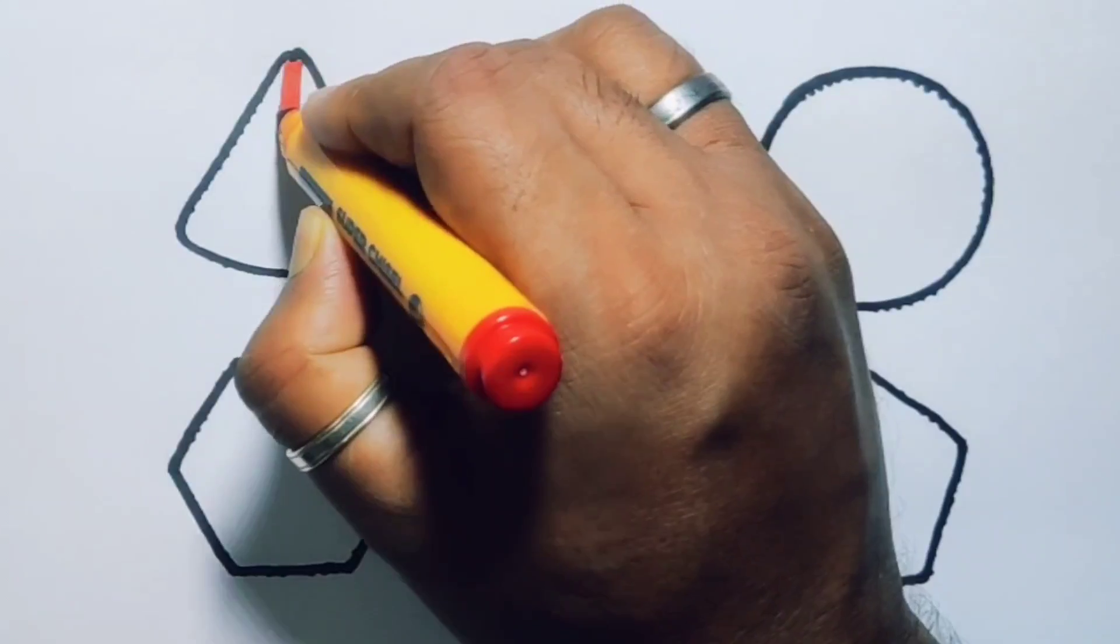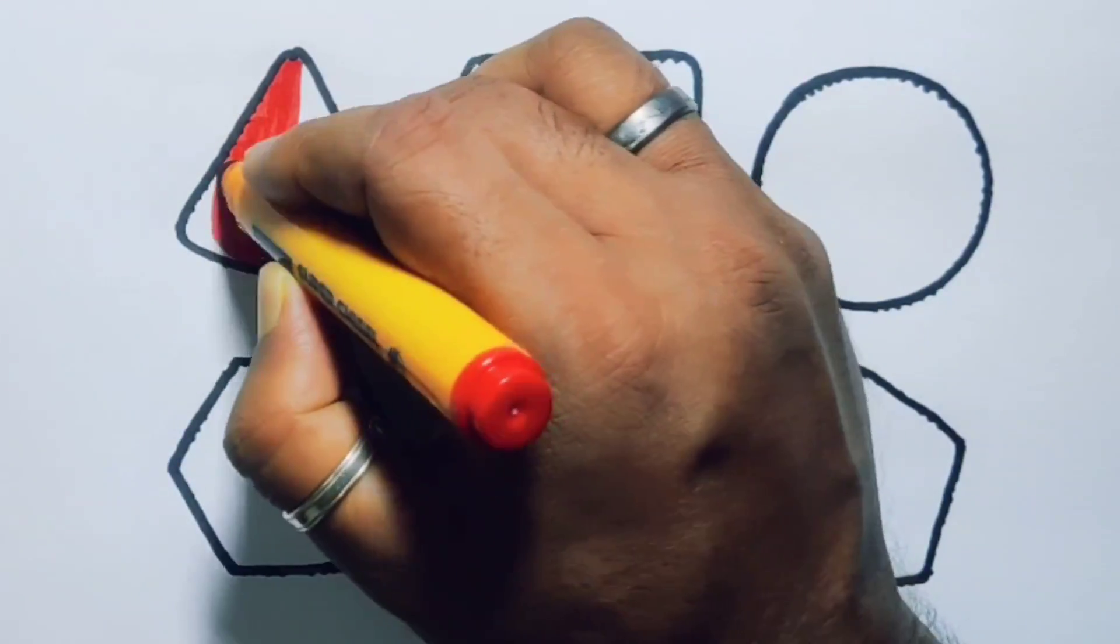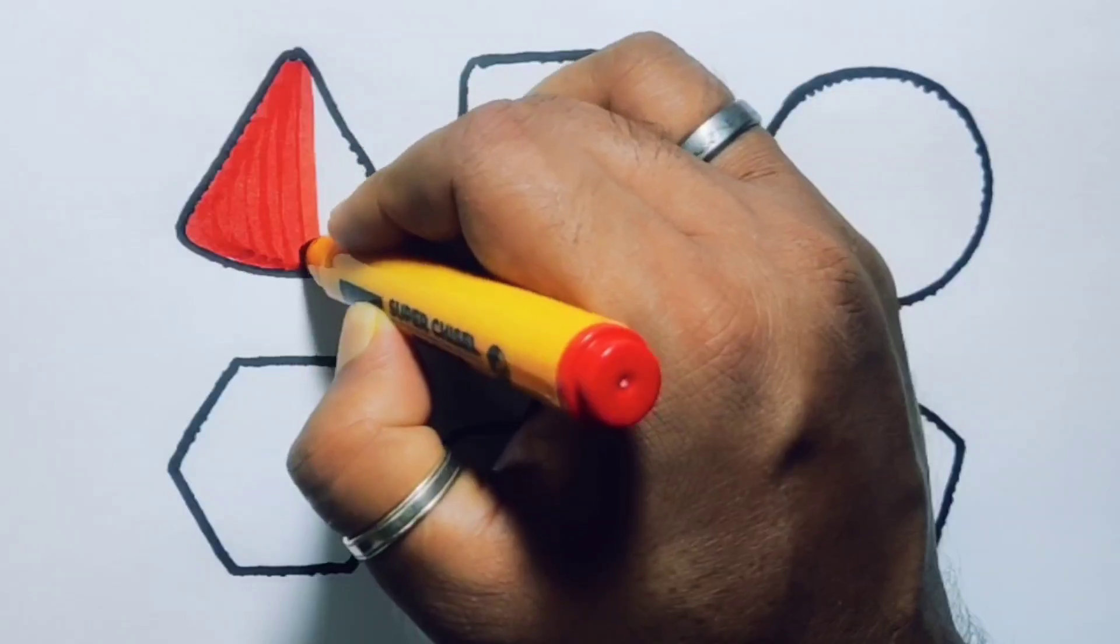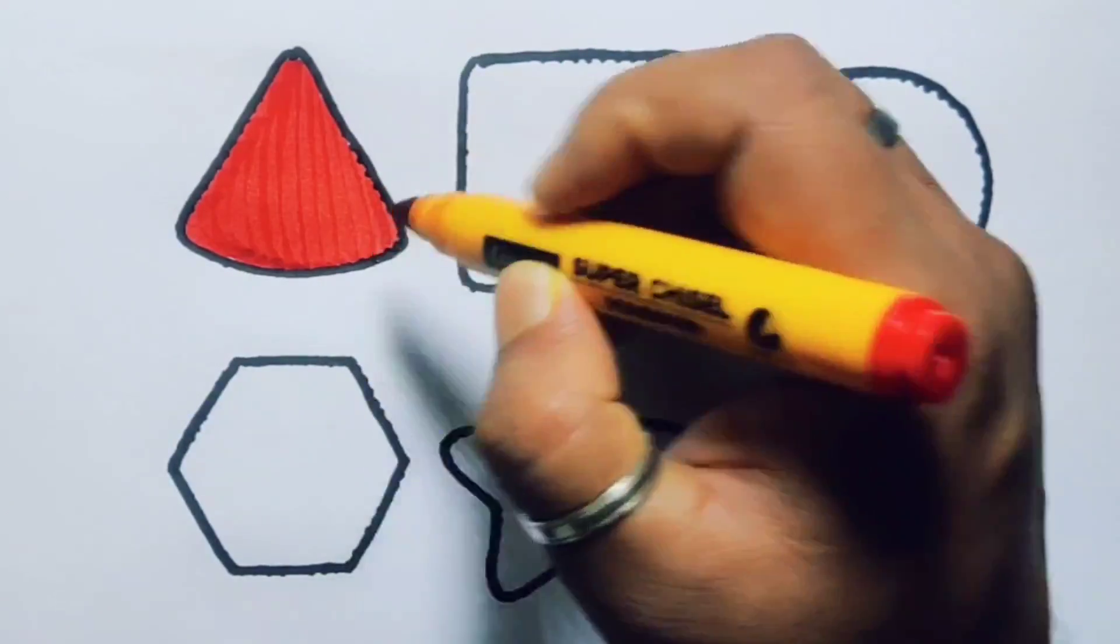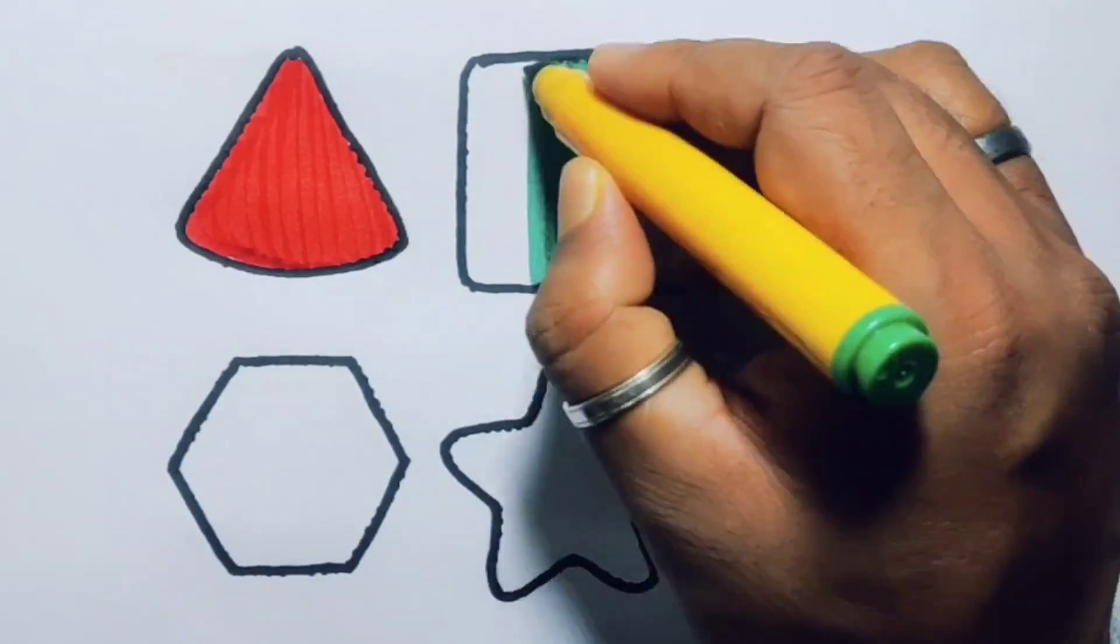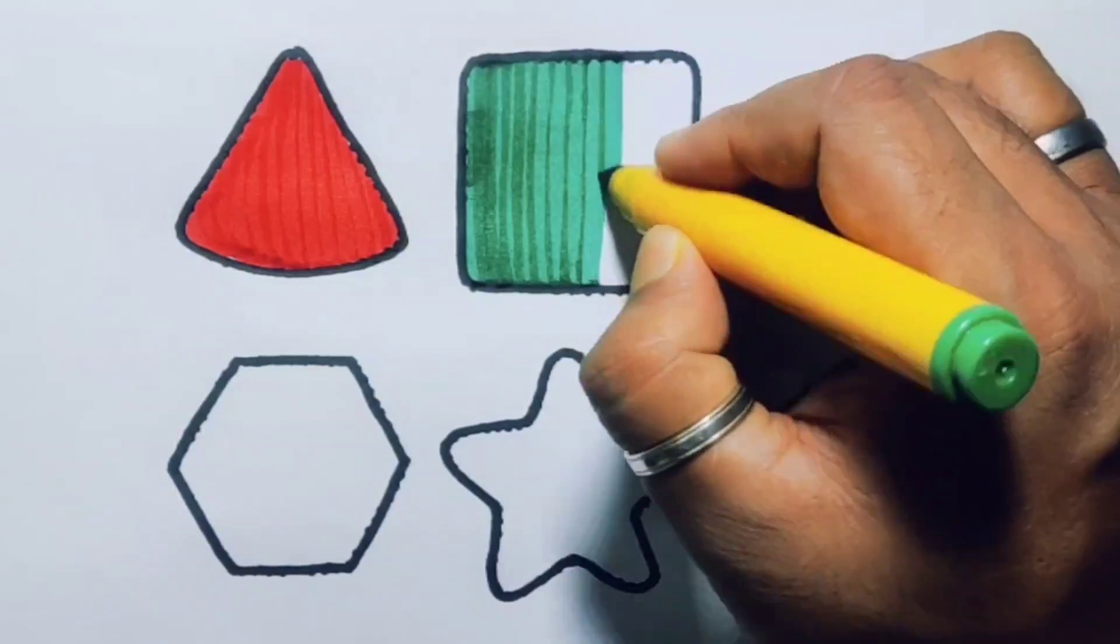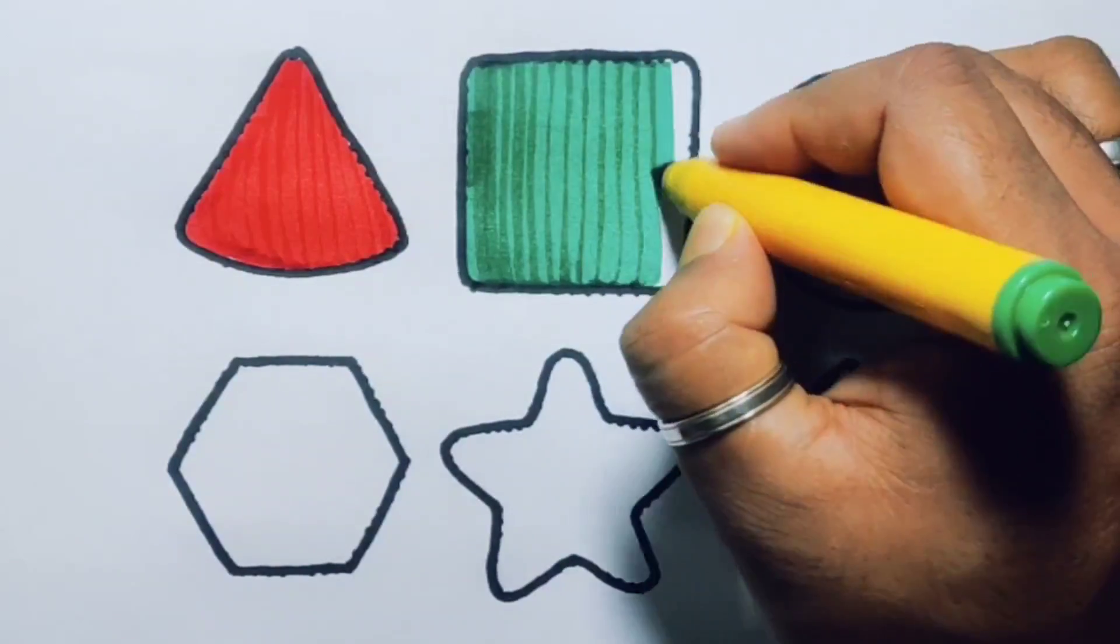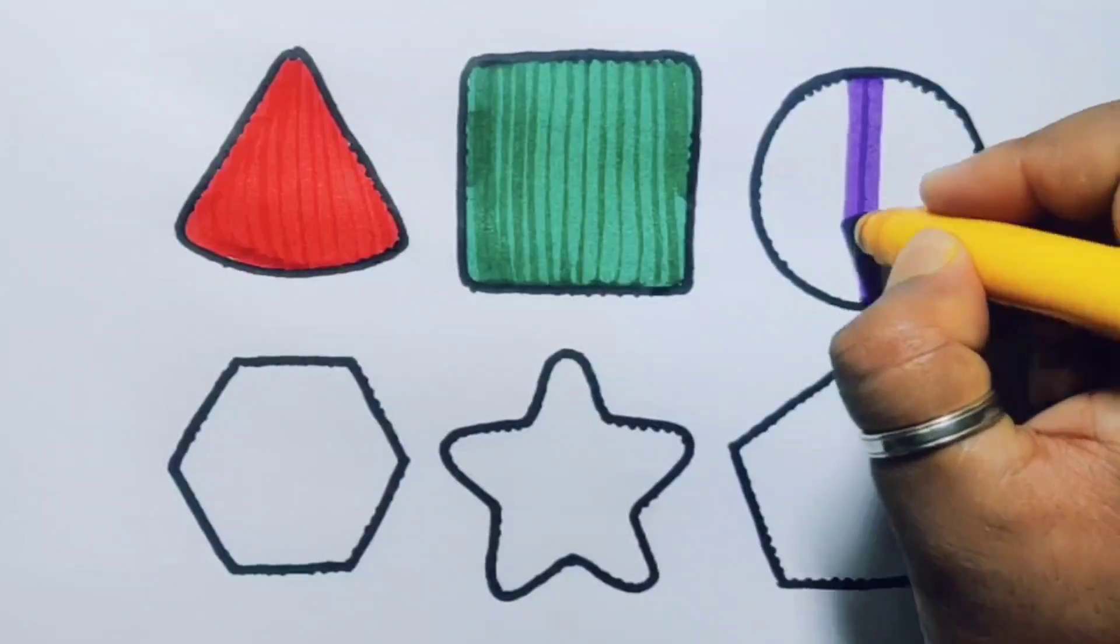Now we're going to color them. Red triangle, green square, purple circle.